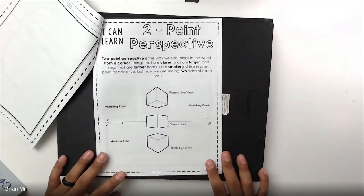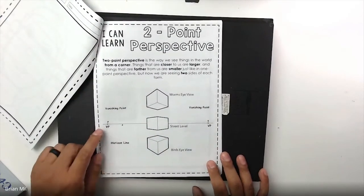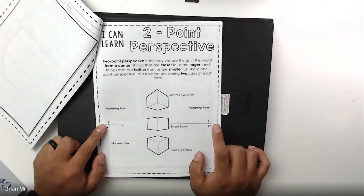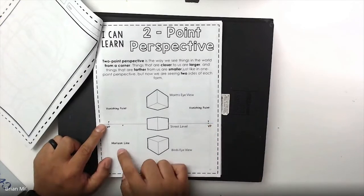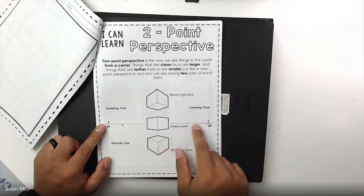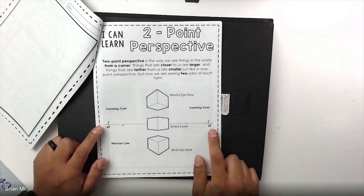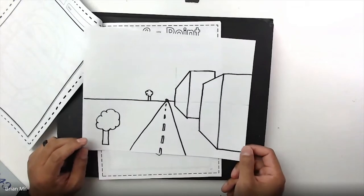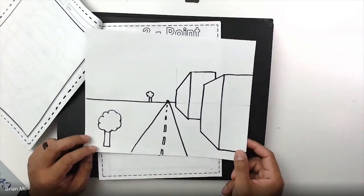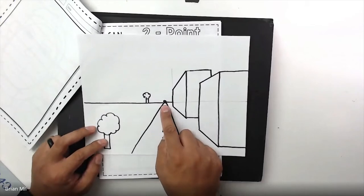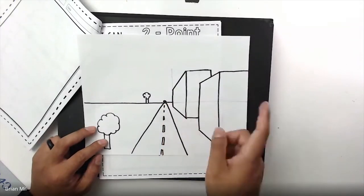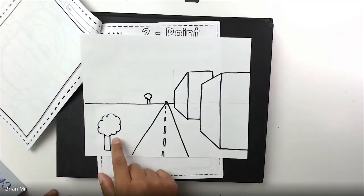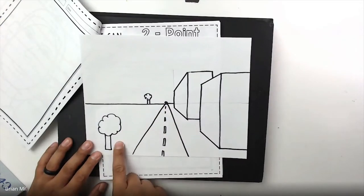But now we are seeing two sides of each form. Down below there's an example of how two-point perspective works. There are two points — these are called the vanishing points. There's one vanishing point on the very far end and another on the very opposite side. The horizon line is where the land meets the sky. One-point perspective includes just one point, like a river or road in the middle, where things get smaller as they go further away.